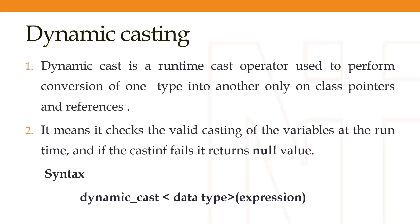The next topic is dynamic casting. Dynamic casting is a runtime cast operator used to perform the conversion of one type into another, but only on class pointers and references. The key difference from static cast is that static cast is a compile-time cast operator while dynamic cast is a runtime cast operator. If the casting fails at runtime, it will return the null value.